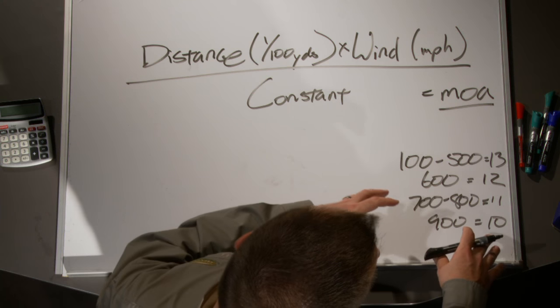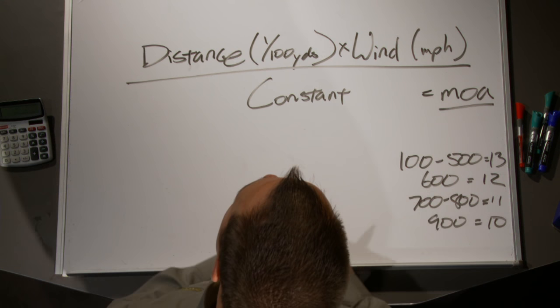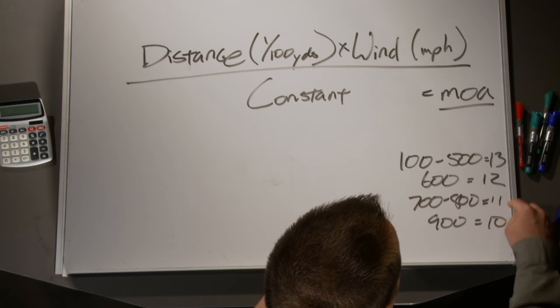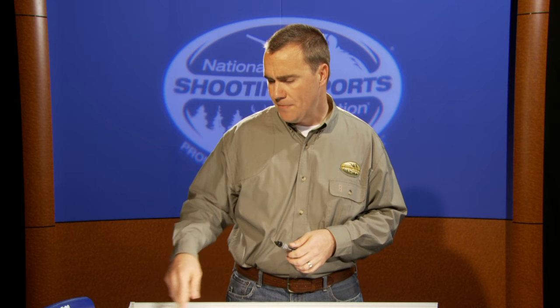Since I don't like things that are complicated, I want to be able to do something easily in the field that's easy to remember. Even though the numbers get smaller at really far distances, I like to use 12 for everything — that's a good mix for me. Although that's not technically right, I'm going to show you how it's going to be close enough. I'll leave these constants here so we can refer back to them and see the difference.